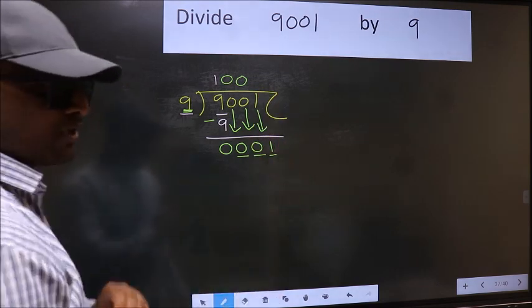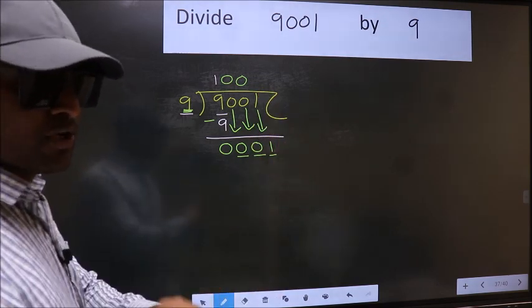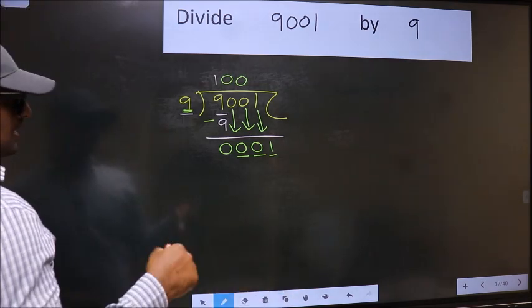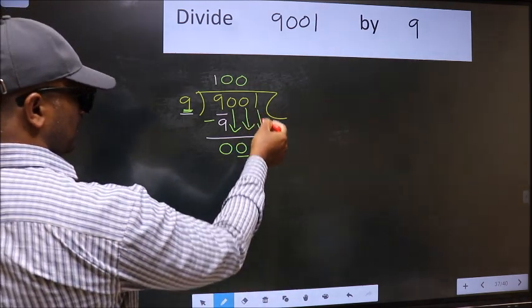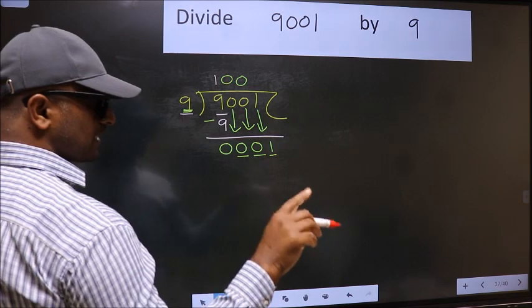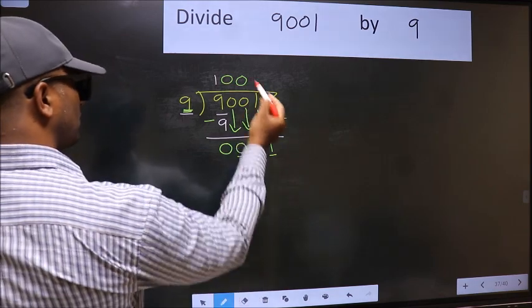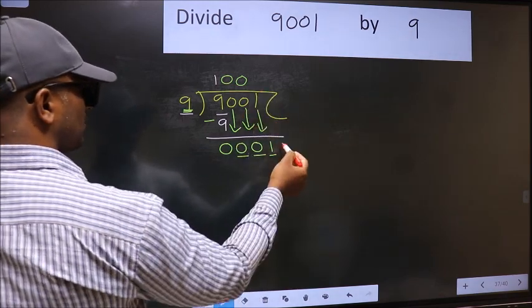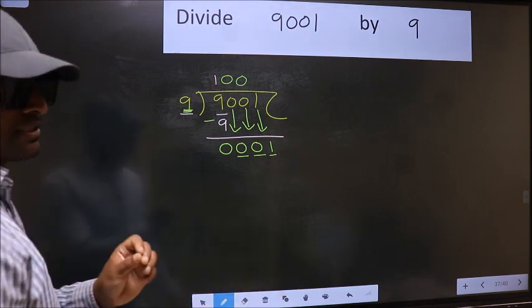Which is wrong. Why is it wrong? Because just now you brought this number down, and in the same step you want to put dot, take 0. Which is wrong.